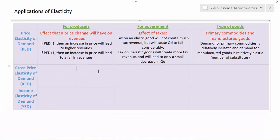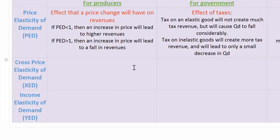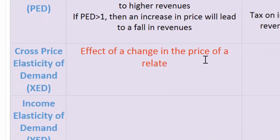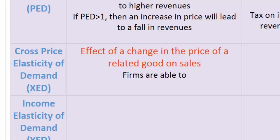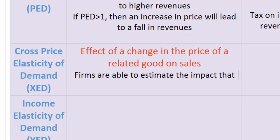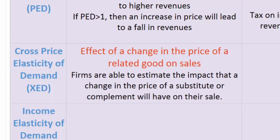Let's move on to XED. Cross price elasticity of demand matters to producers for a very important reason. A knowledge of XED for a particular firm's goods will allow that firm to estimate the impact of a change in the price of a related good on that firm's demand. Firms are able to estimate how a change in the price of a substitute or a complement will affect sales for their good, and adjust their output appropriately when the price of related goods changes.